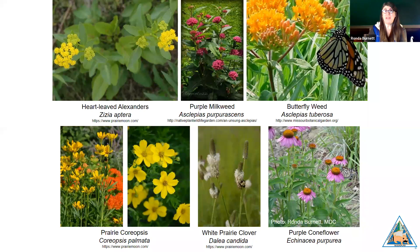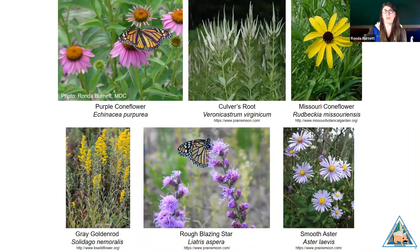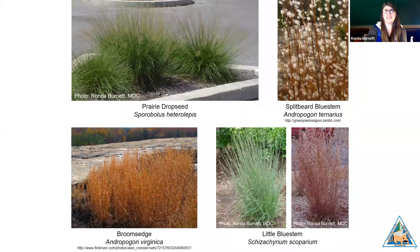I'll now show you the plants we ended up including in these beds, in order of when they bloom, starting in early spring through fall. The first bloomers were heart-leaved Alexanders. Then purple milkweed and butterfly weed, prairie coreopsis, white prairie clover, purple coneflower, Culver's root, Missouri coneflower, gray goldenrod, rough blazing star, and smooth aster. For the grasses, we decided on prairie drop seed as our border grass. The interior bed grasses selected were split beard bluestem, broom sedge, and little bluestem.